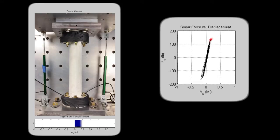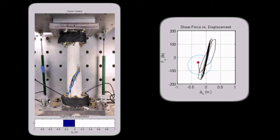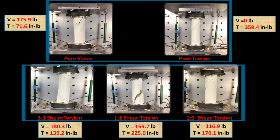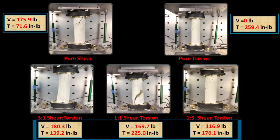Failure of each specimen was determined by noting the point at which the load carrying capacity of the specimen dropped significantly. All five specimens are shown here at the point of failure, with the maximum lateral and torsional loads reached in testing noted below each image.